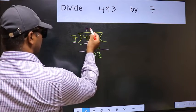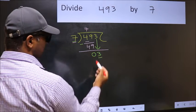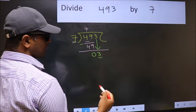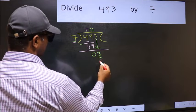If I take 1, we will get 7, but 7 is larger than 3. So what we should do is take 0. 7 into 0 is 0.